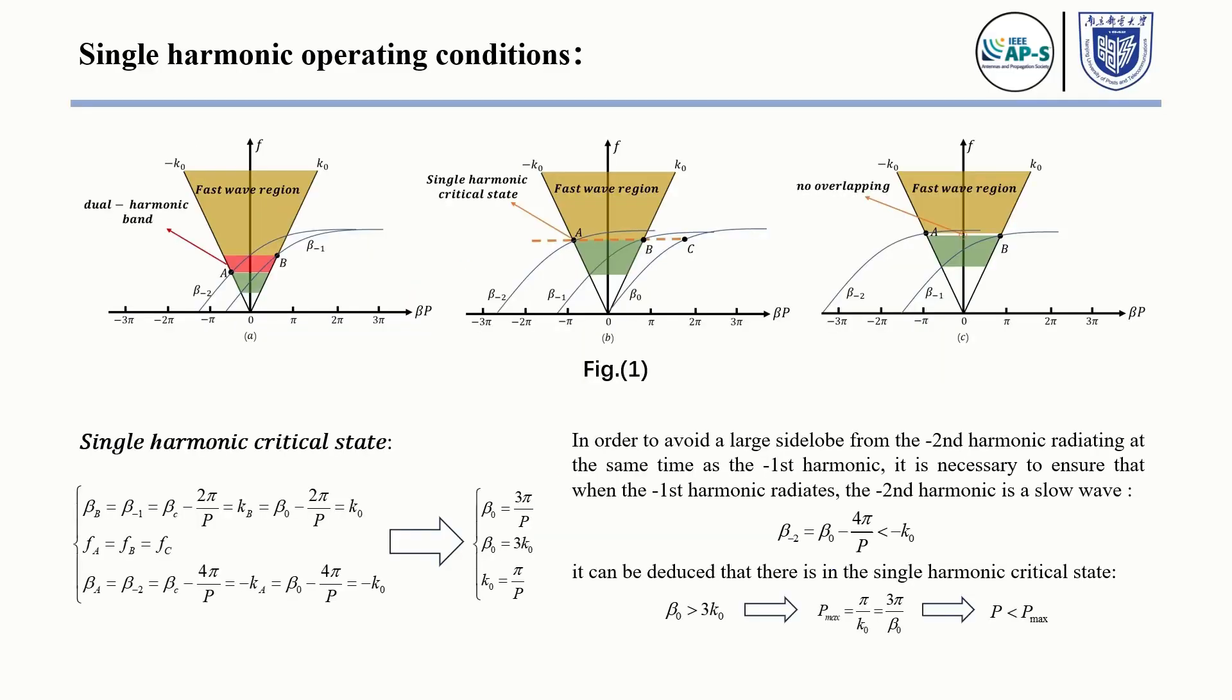In order for the main beam to be stable and continuously scanned in full angle, we need to make the minus 1st space harmonics radiate separately in the fast wave region. It is necessary to satisfy the condition that the frequency at the end fire of the minus 1st harmonic is less than the frequency at the minus 2nd harmonic backfire.